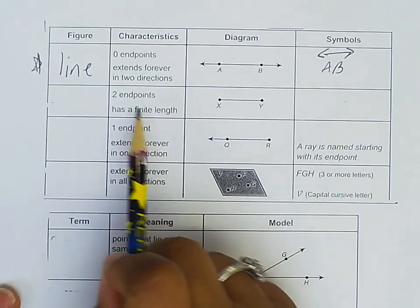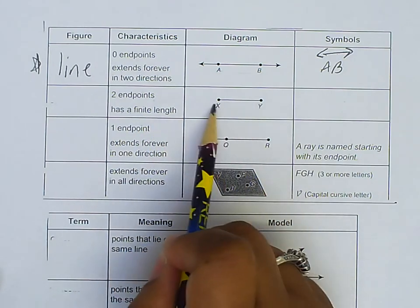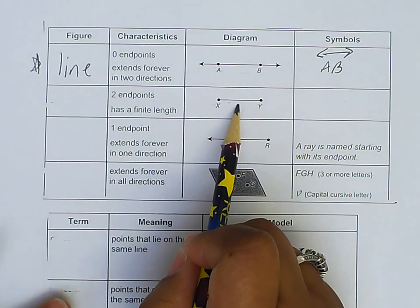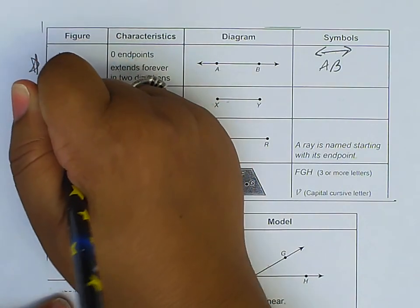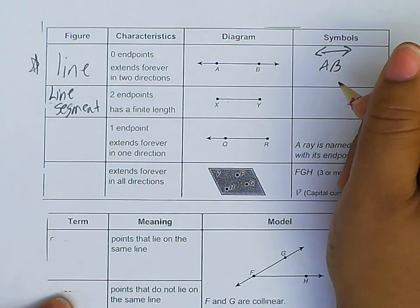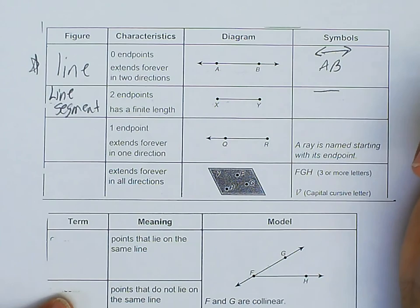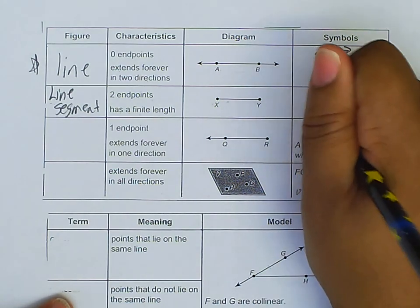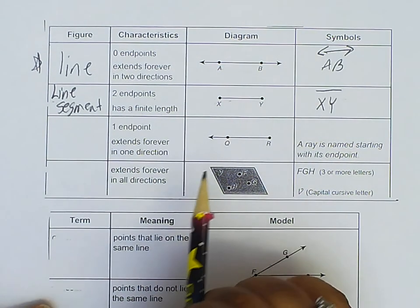Then the other thing right here, it says two endpoints, has a finite length. So you can see that there's no arrows at the end. This is called a line segment. And the symbol for that is just a straight line. And some of this is in your vocab, which is fine, but you do need to write it again in your notes. And this will be called XY, line segment XY.